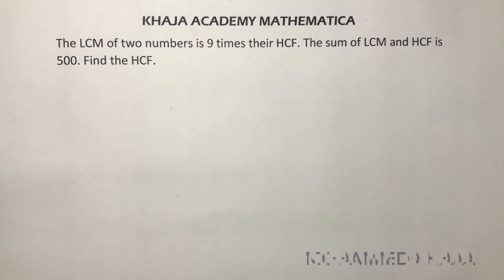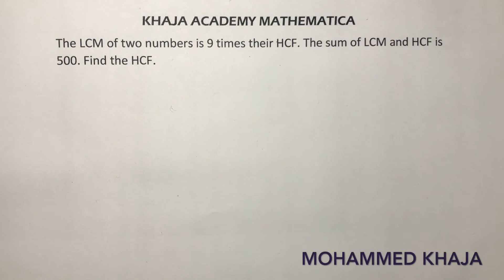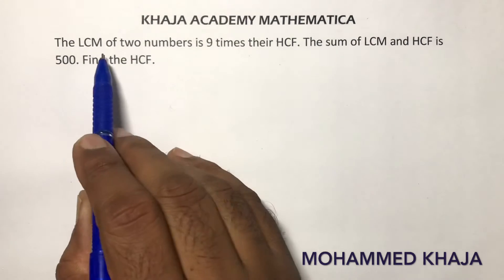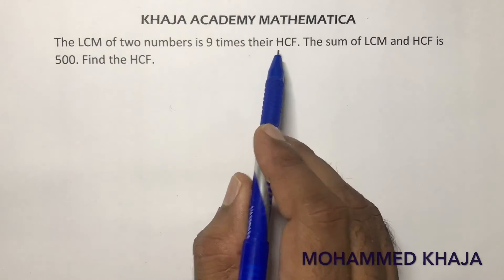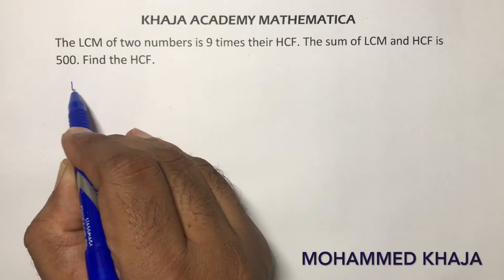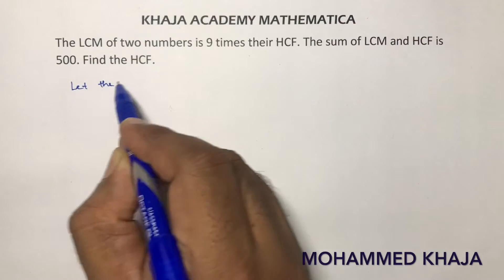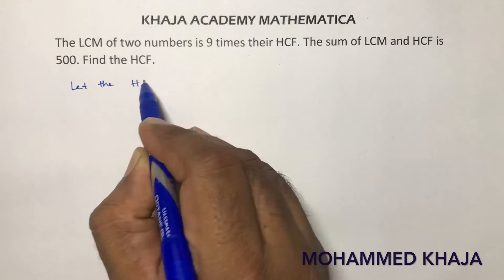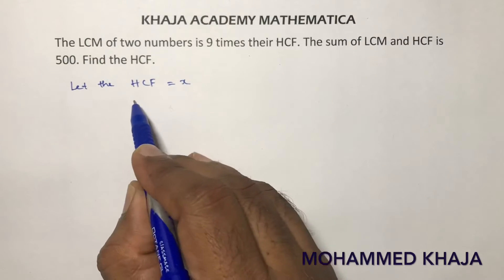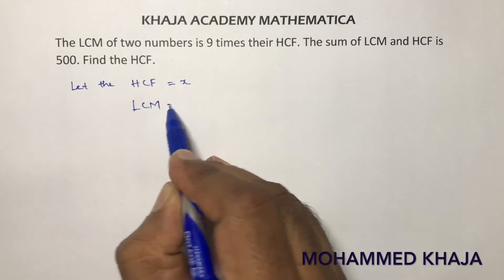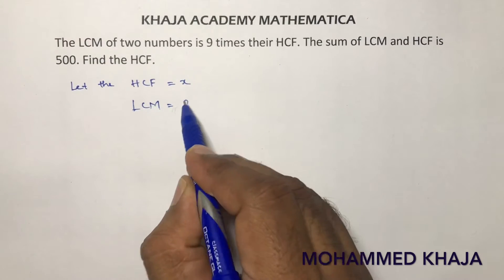The LCM of two numbers is 9 times the HCF. The sum of LCM and HCF is 500 — find the HCF. Let the HCF be x, then LCM will become 9 times x.